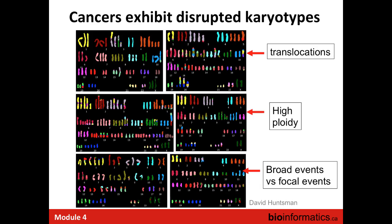These genomes are from ovarian carcinomas, which have some of the highest burden of copy number aberrations in cancers. They look nothing like the normal karyotype we saw earlier, and it's obvious from these images that copy number changes are a major feature of cancer. It makes sense to study the copy number profiles in detail to get insight into these tumors. They're really laborious to produce but pretty fascinating to look at, so I'll point out a few key features.